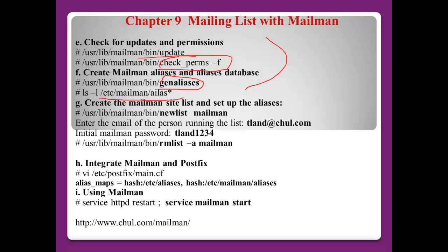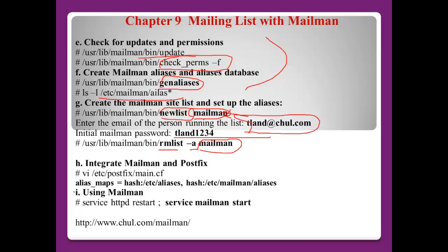To create a mailing list, go to /usr/lib/mailman/bin and use the command 'newlist'. Enter the name of the mailing list, then the administrative email address for the list, and a password. If you want to delete a mailing list, use 'rmlist -a' followed by the mailing list name. To integrate Mailman with Postfix, in main.cf set 'alias_maps' to include both the standard aliases and the Mailman aliases — then Postfix will acknowledge Mailman aliases as well. After that, restart the httpd service and the Mailman service.